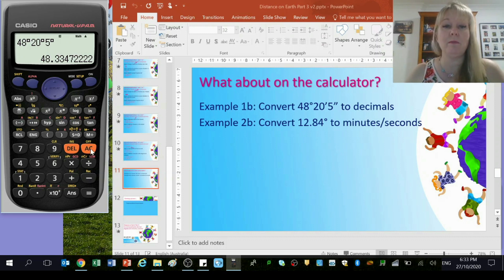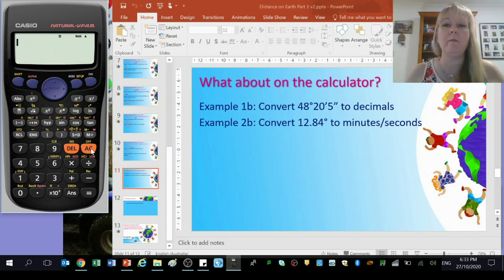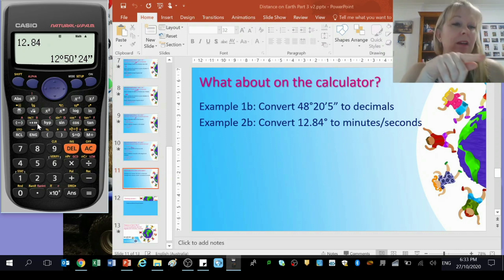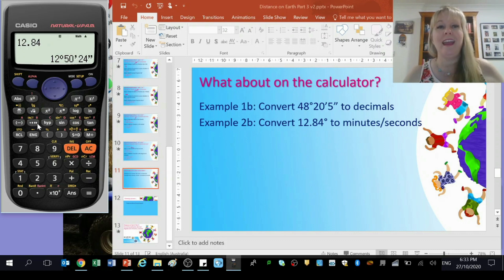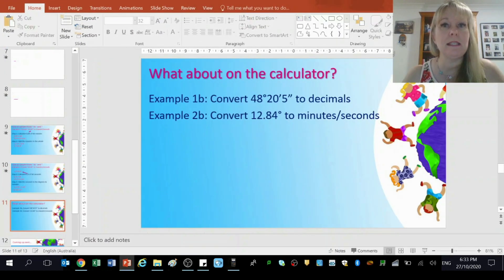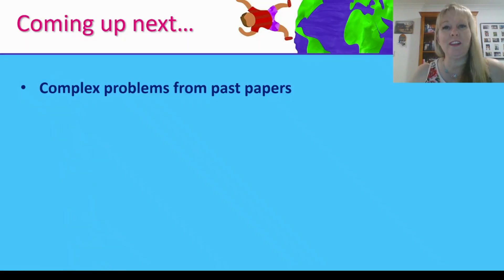That was pretty easy but what about back the other way? I'm going to do 12.84 this time. I press the equals button on the calculator and then I press my degrees button and boom it's already changed to minutes and seconds. It's that simple. If you're stuck in an exam and don't remember what to do, press your equals button and then press the degrees button a couple of times. It's bound to come up with the minutes and seconds eventually.